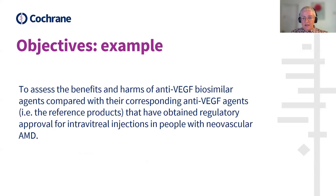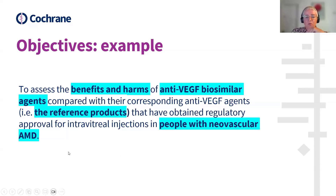Looking at the example used in the abstract, I'm going to pick out the key points and how this has met the PRISMA reporting standards. Authors have identified that they're going to measure both the benefits and the harms. They've stated the new drug being tested — the new agents — and the comparison, which are the reference products, the current drugs available. And they've clearly stated the population as people with neovascular age-related macular degeneration.